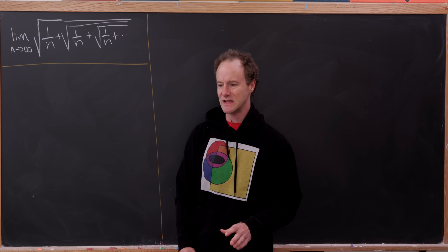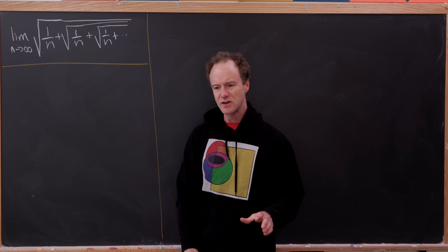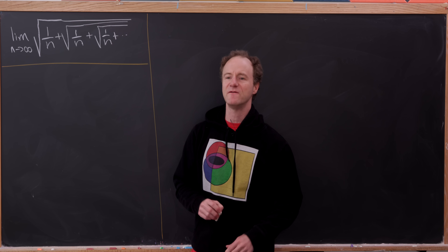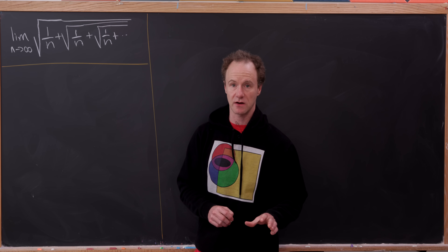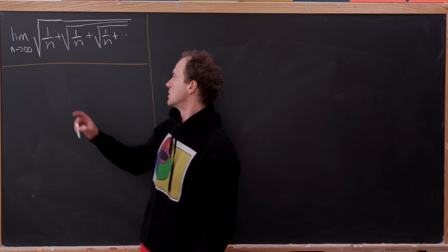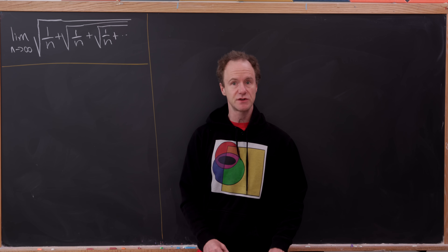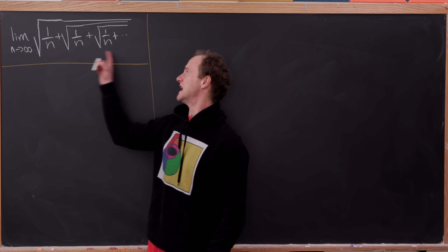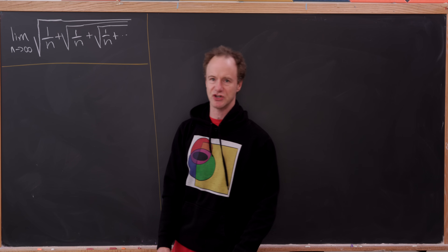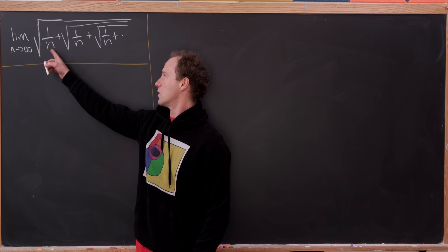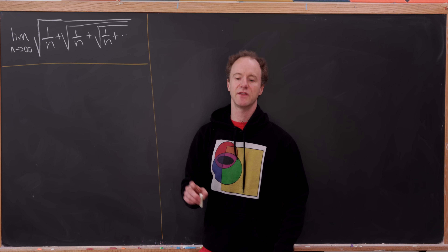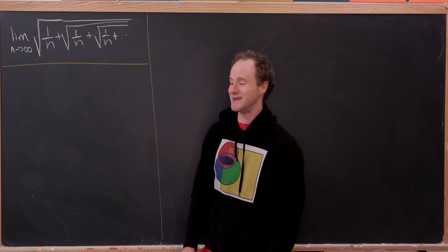Today we're going to look at a really nice limit that's also going to allow us to explore the failings of one of my favorite tricks to use on the channel. We'll calculate the limit as n goes to infinity of this infinitely nested square root object: the square root of 1/n plus the square root of 1/n plus the square root of 1/n, all nested.